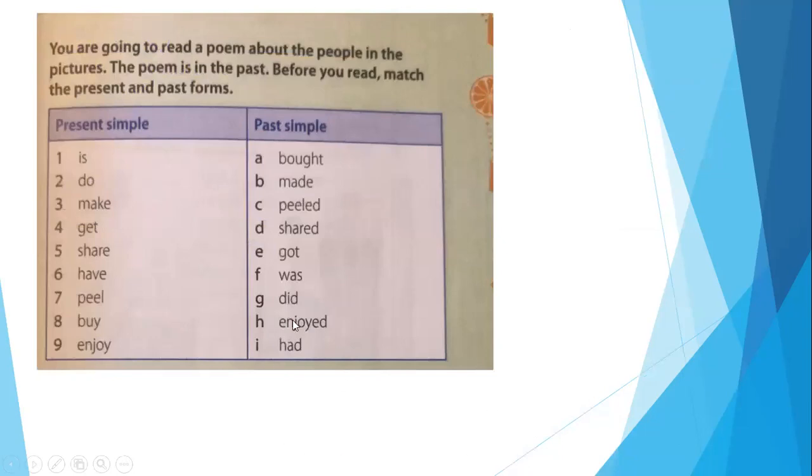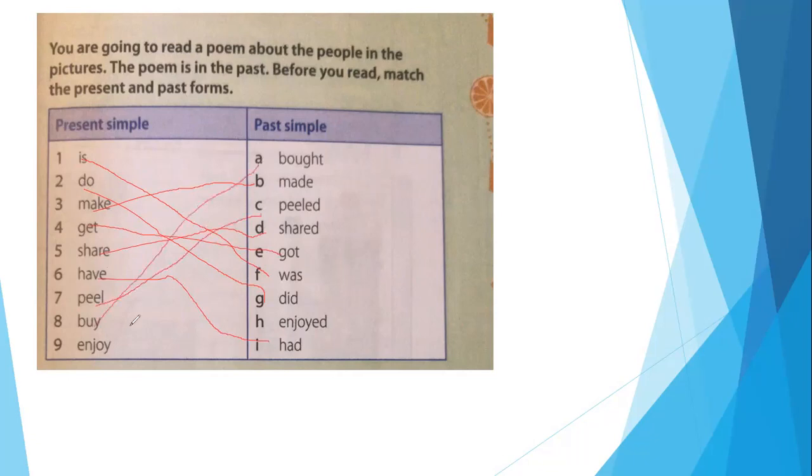Now the last one, we are going to match the simple present verb with the form of the past. The past tense of is was, do with did, make with made, get with got, share with shared, have with had, peel with peeled, buy with bought, enjoy with enjoyed. Okay, the present form and the past.